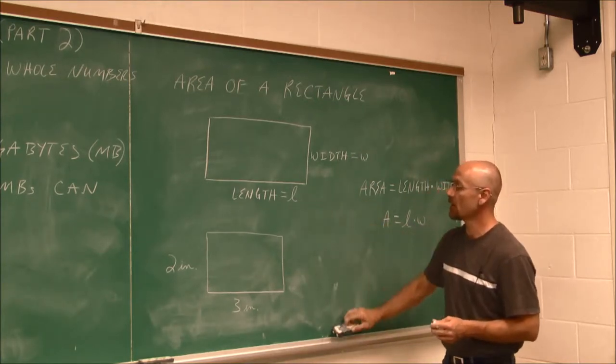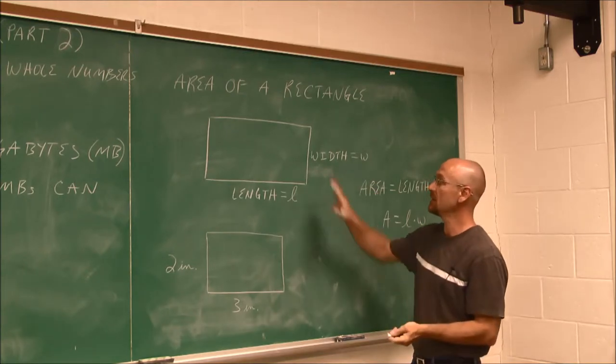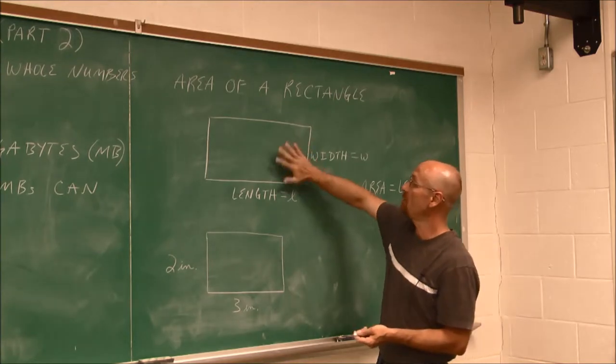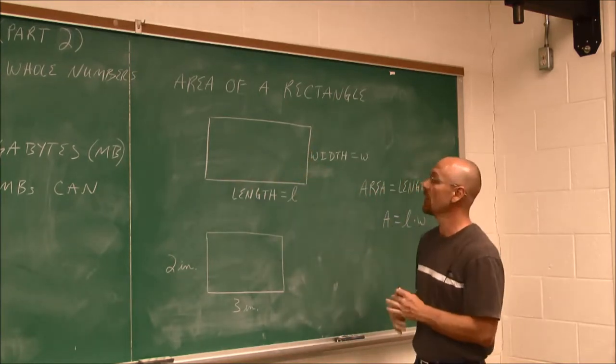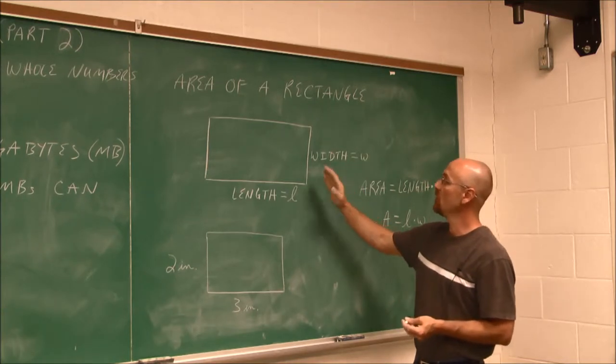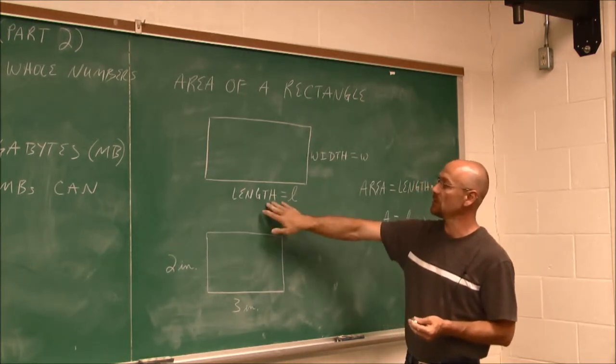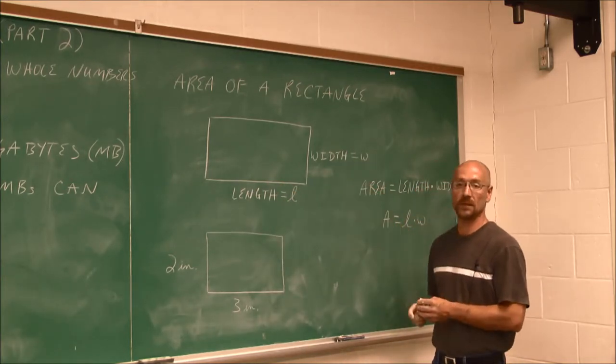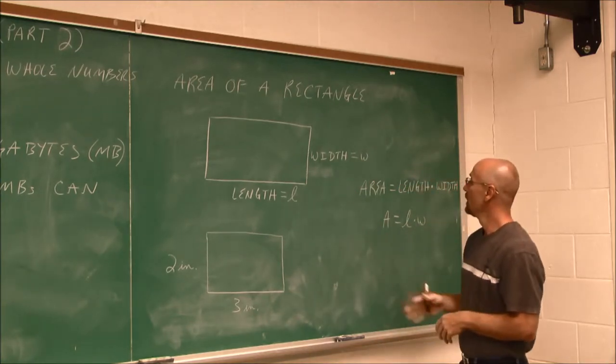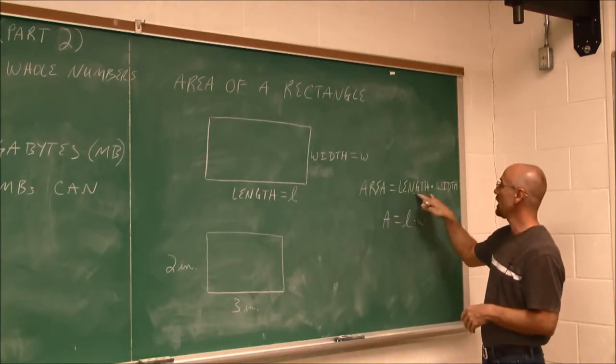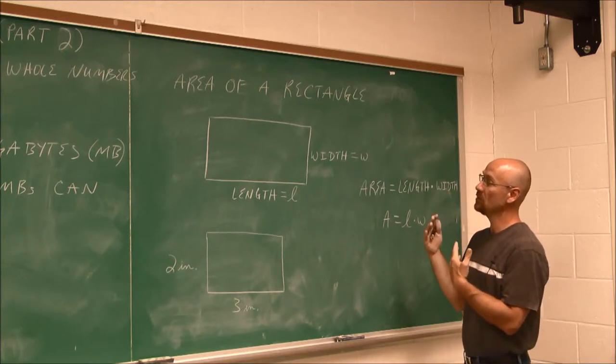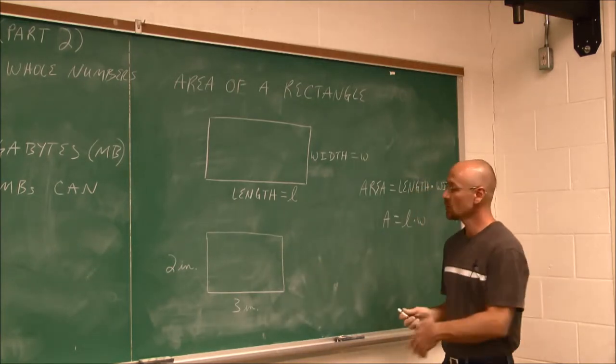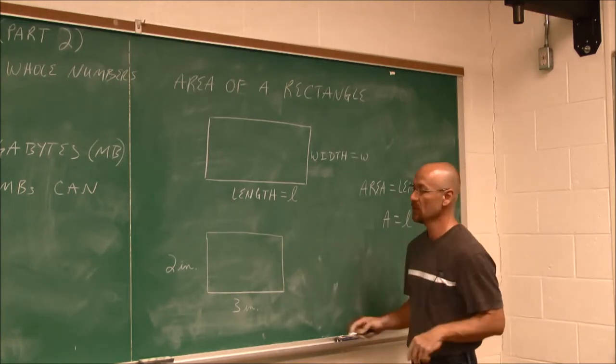But now we're going to talk about area. Area is not the distance around. It's the space that this may occupy. How much area does it cover? Well, that's where the term area comes from. To find the area, we want to do length times width. And I always like to denote the longer side as my length and the shorter side as my width. But it really doesn't matter. You could call either one the other. So area is defined as length times width. And when we find area, we always have to be aware of units. Just like we did in the last story problem, units are important.